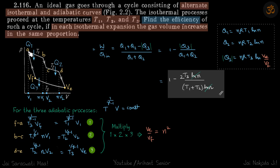An ideal gas goes through a cycle consisting of alternate isothermal and adiabatic curves. The processes proceed at the temperatures T1, T2, and T3. We need to find the efficiency of the cycle if in each isothermal expansion the gas volume increases in the same proportion.